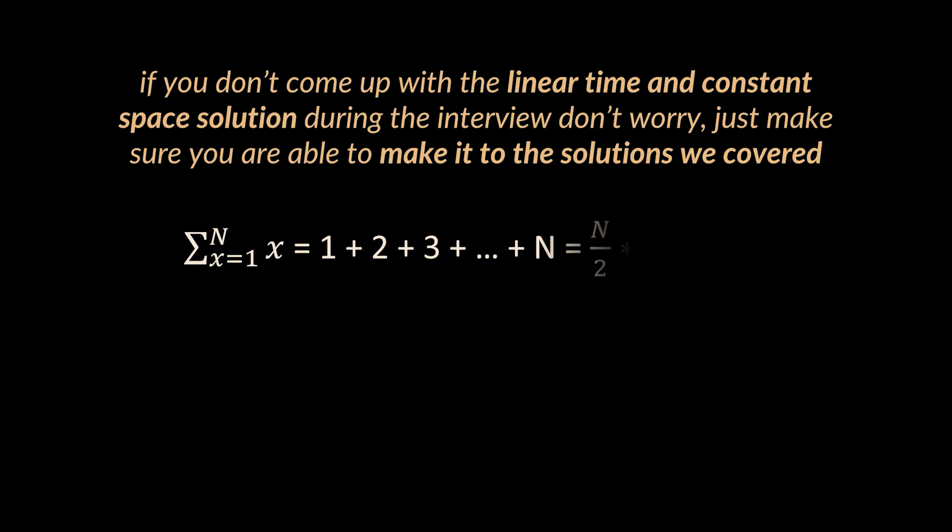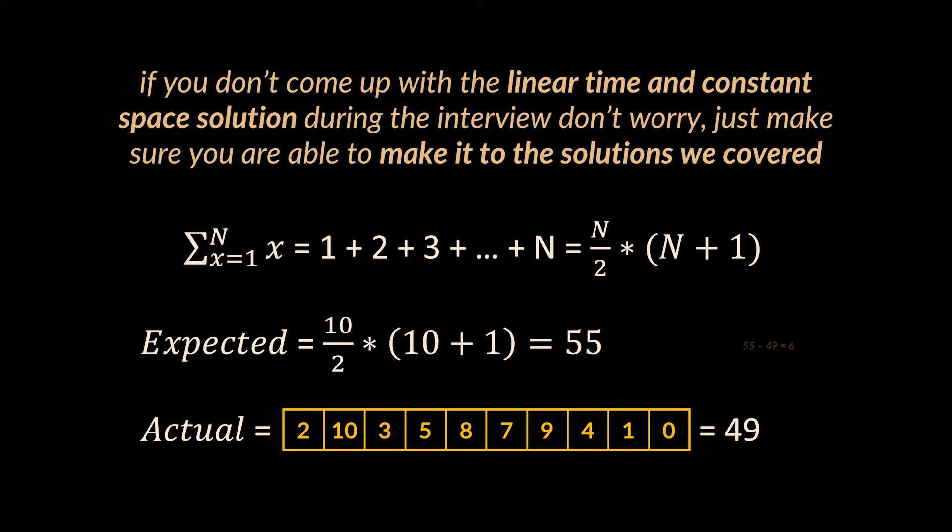To solve this in linear time and without extra space, we will need a bit of mathematics. You see when Gauss was 10 years old, he taught the world that the sum of integers ranging from 1 to n is equal to n times n plus 1 over 2. So let's bring back our example having n equal to 10. If we had all the elements we want, the expected sum would be 55. But if we go ahead and calculate the actual sum, we will obtain 49.